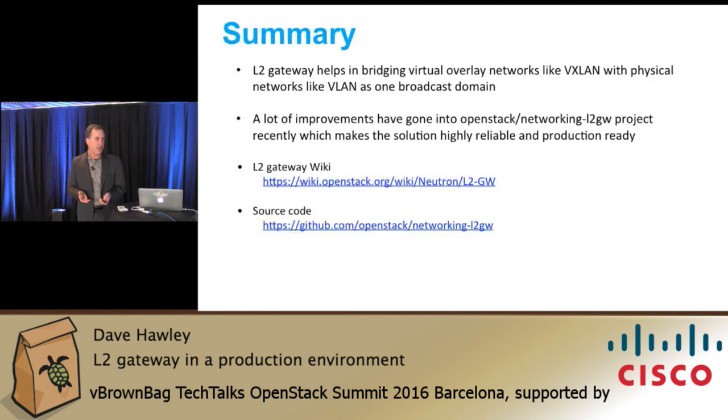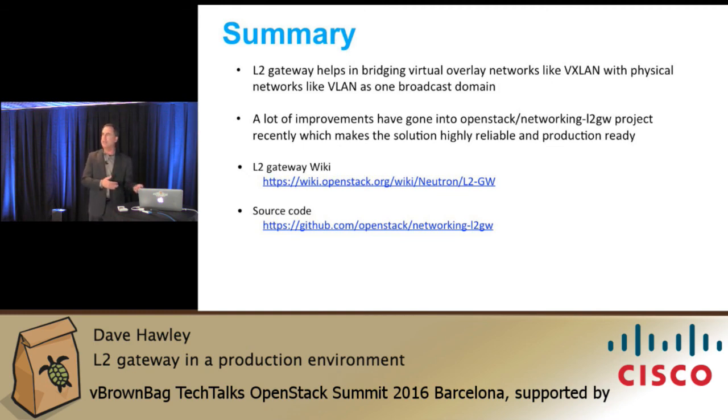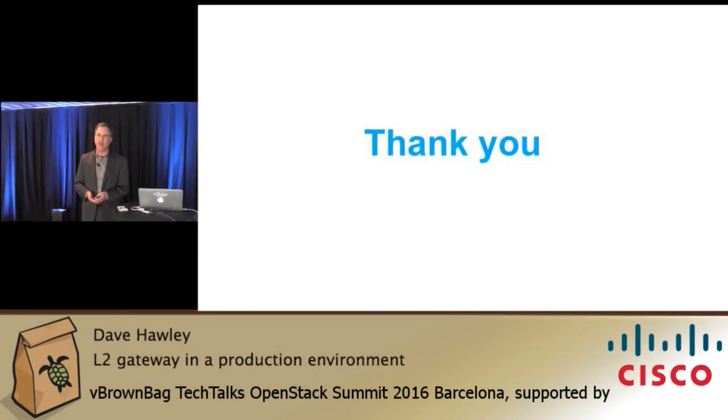In summary, the Layer 2 Gateway allows you to connect bare metal servers using VLAN technologies into your cloud environment. The Layer 2 Gateway function has undergone substantial enhancement over the last release, and the solution is now what I'd call ready for prime time in terms of real production deployments. More information is available at the Layer 2 Gateway Wiki and the source code is available upstream. The latest HPE Helion release also includes this technology, with documentation available on the HP Cloud website. Thank you very much — I'll be available at the side of the stage for any questions.